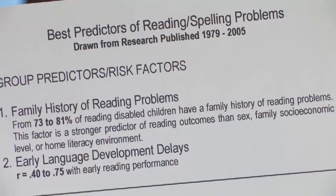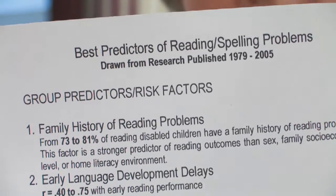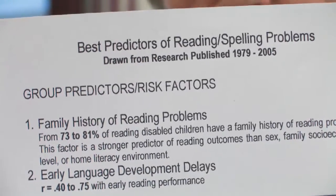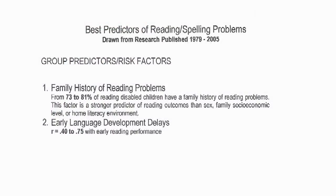There are eight really critical predictors of poor reading after a child comes to school. The very first one is family history of dyslexia or of poor reading. That has to do with the possibility that a gene which supports the ability to learn to read and spell has a mutation that impacts development.